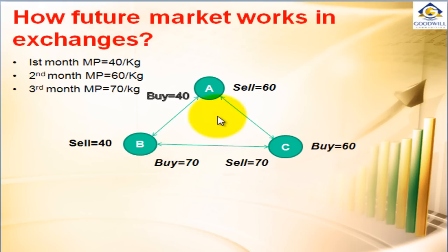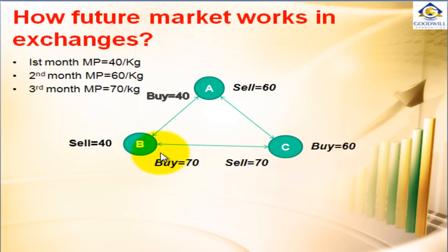Let us sum up: A would have gained Rs 20 out of this transaction. C would have gained Rs 10 out of this transaction. But B entered into a loss because he expected the price to come down — at the end, he lost Rs 30. In this particular trading, we saw no rice exchanged between them. All the traders used the futures market and the price fluctuation in the underlying asset, and they took advantage of the price variation to make profit.